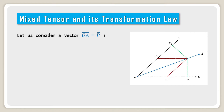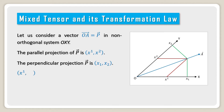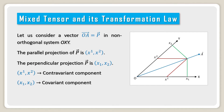Mixed tensor and its transformation law. Let us consider a vector OA equal to P in a non-orthogonal system Oxy. The parallel projection of P is x upper suffix 1, x upper suffix 2. The perpendicular projection of the vector P is x lower suffix 1, x lower suffix 2.